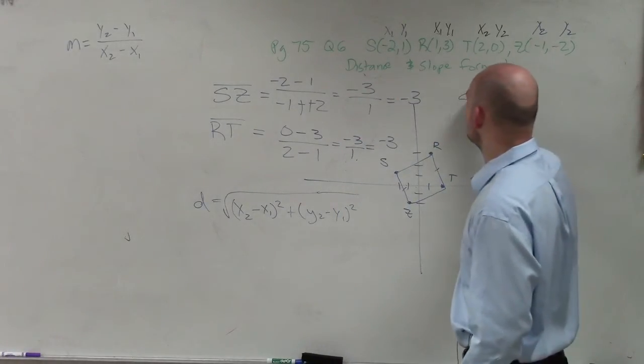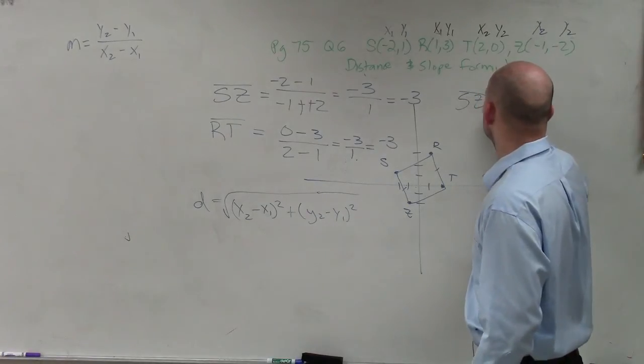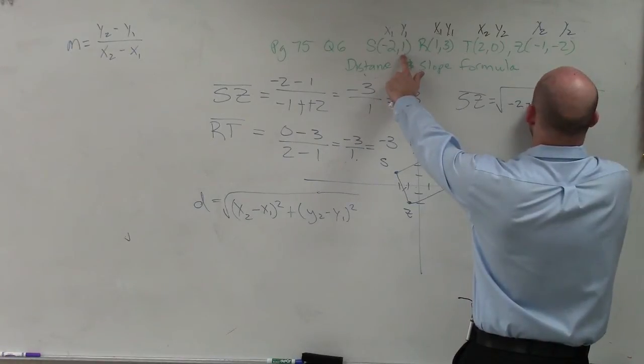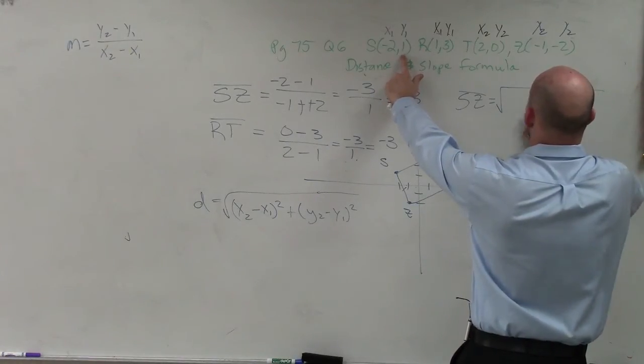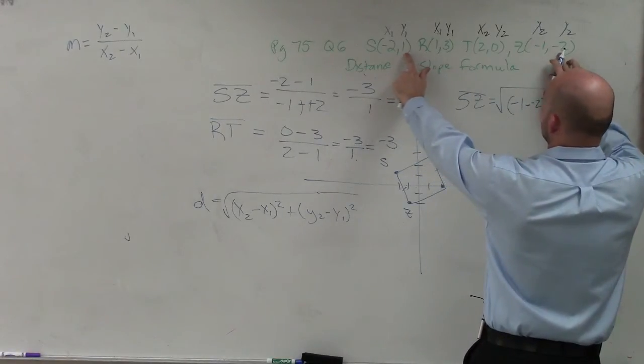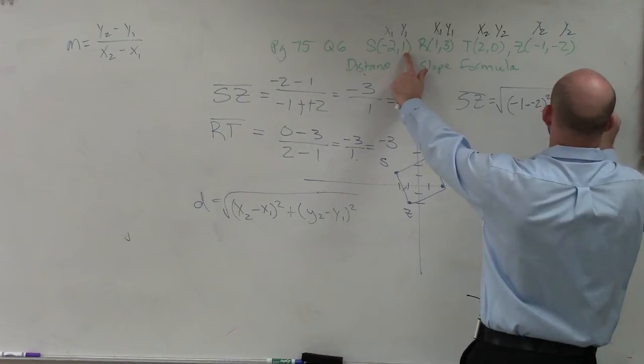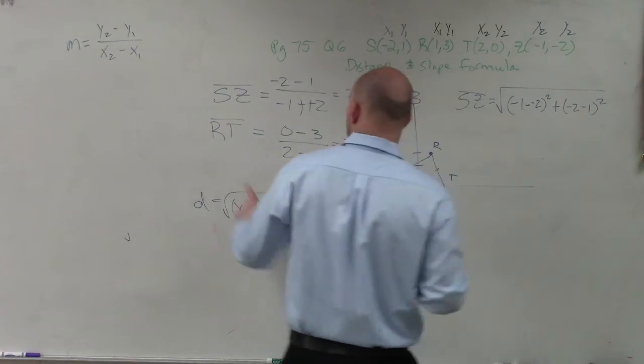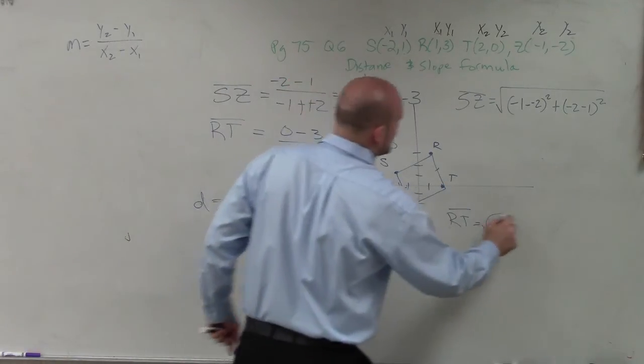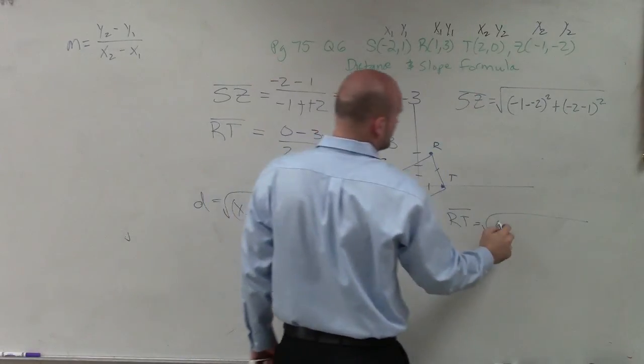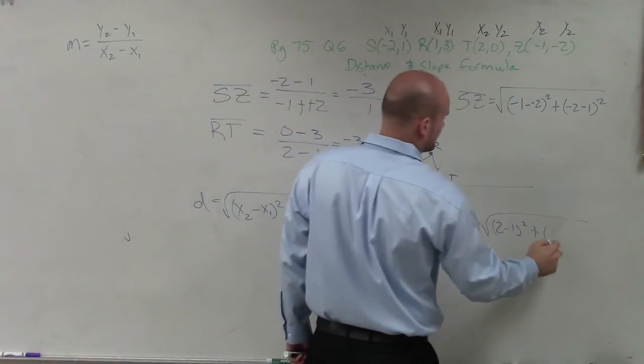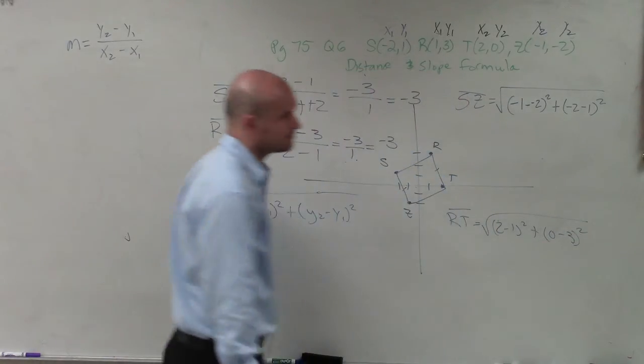So let's find the distance of SZ. Well, that's going to equal the square root. So SZ here is going to be negative 2 minus x2 minus 1. So you do negative 1 minus a negative 2 squared plus y2 minus y1, which would be negative 2 minus 1 squared. And then we need to find the distance of RT. So the distance of RT is going to be 2 minus 1 squared plus 0 minus 3.